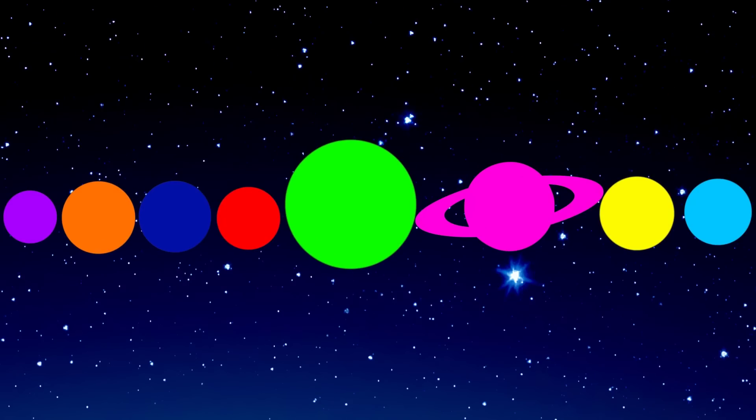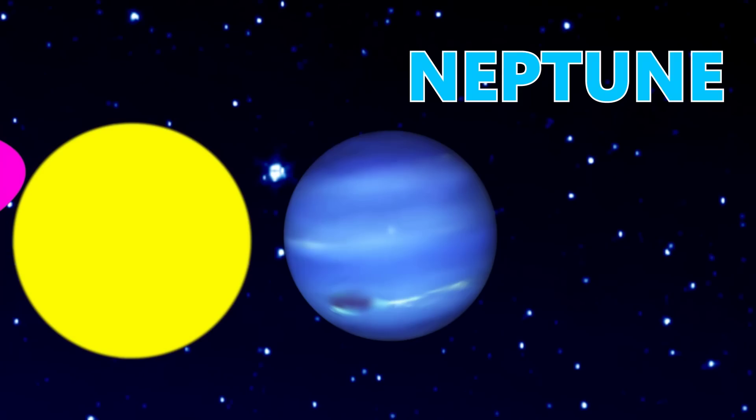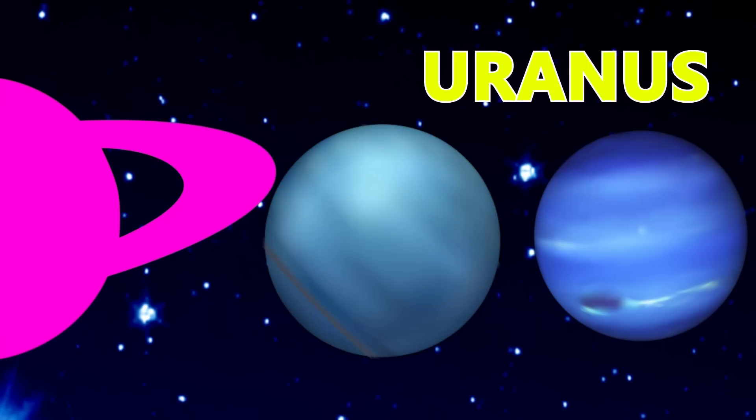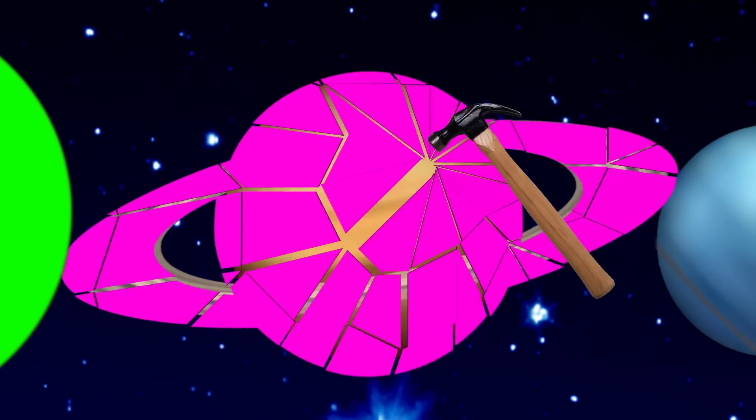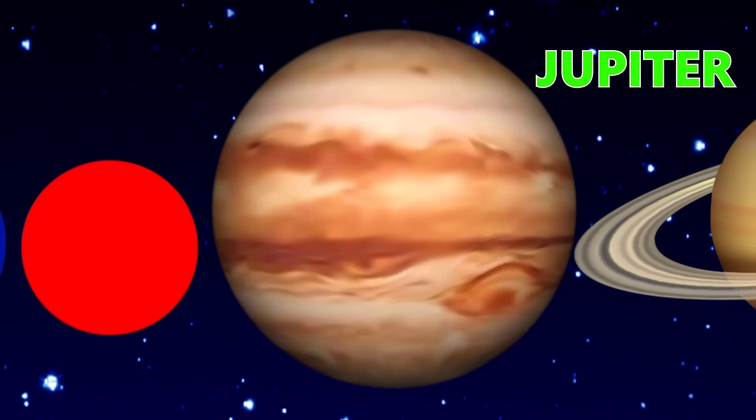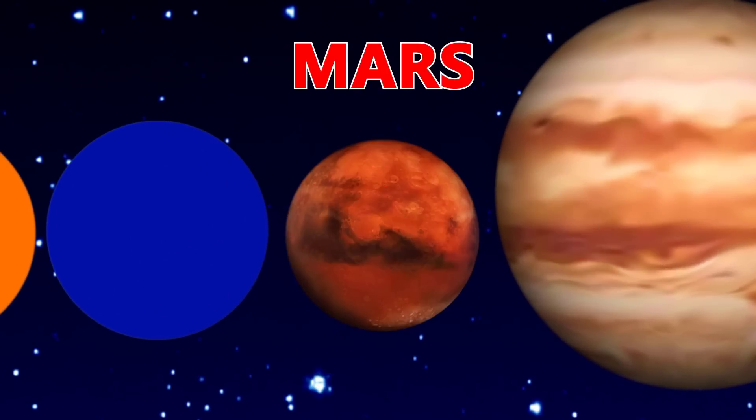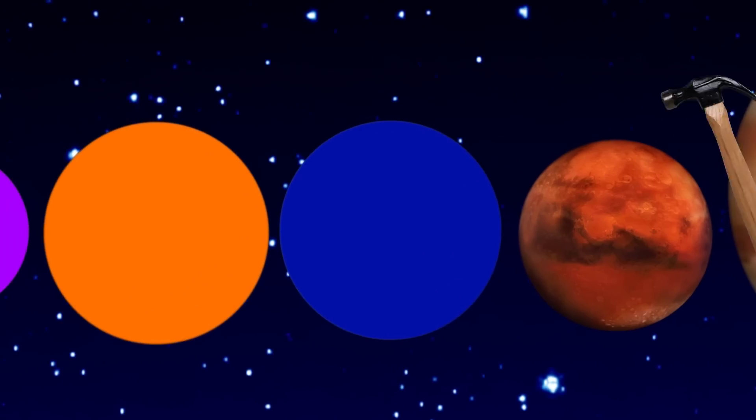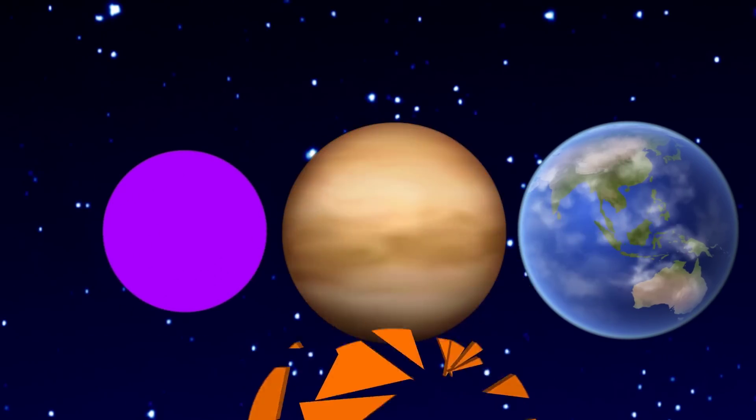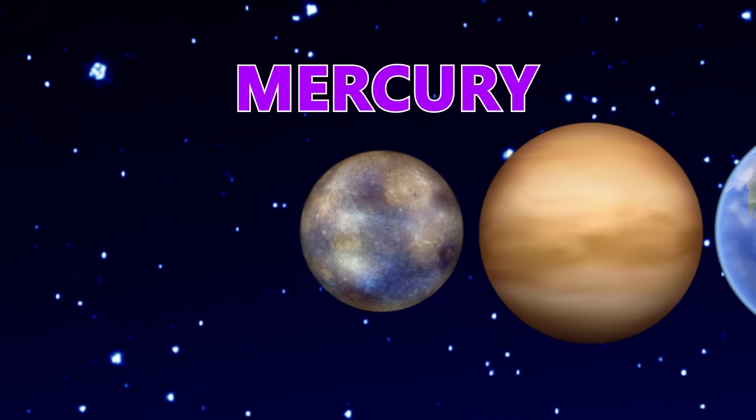Today we learn colors and the name of the planets. Blue, Neptune, 8th planet. Yellow, Uranus, 7th planet. Pink, Saturn, 6th planet. Green, Jupiter, 5th planet. Red, Mars, 4th planet. Dark blue, Earth, 3rd planet. Orange, Venus, 2nd planet. Purple, Mercury, 1st planet.